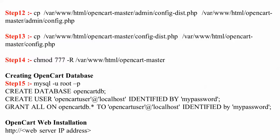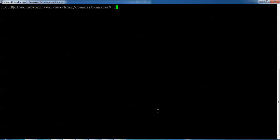Step 14 is to give full permissions to the opencart-master folder. Then I'm going to create a MySQL database — logging in as root — with the name 'opencart_db'. I'll create a username 'opencart_user' for the database, set the password to 'mypassword', grant all permissions, and then open the browser and type the IP address to check the OpenCart installation.